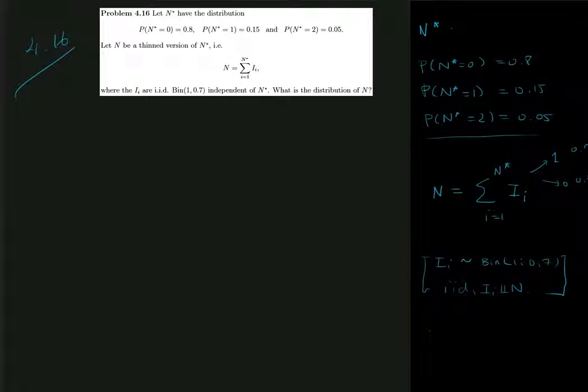n can take values 0, 1, and 2, right? Because you sum 0, 1 variables up to n star and n star can be 2 at maximum. So n itself can be 0, 1, or 2.